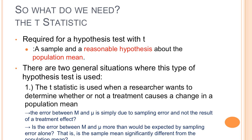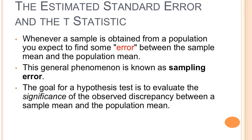Is it more than just sampling error? Is there an actual difference? Whenever a sample is obtained from a population, you expect to find some error between your sample mean and the population mean — that's known as sampling error. The general goal of hypothesis testing is to evaluate whether the difference between these two is a true difference because of whatever the treatment was, or is it just due to sampling error.